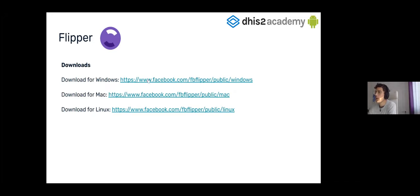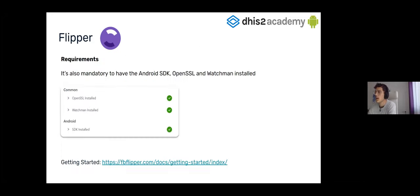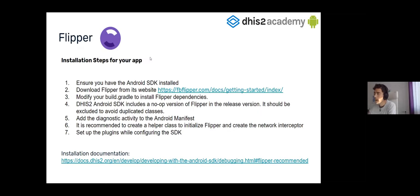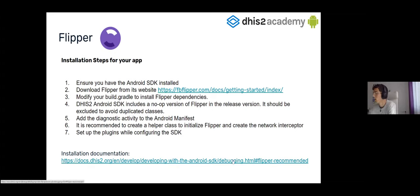For Flipper, you have the download links here in case you didn't download it yet. Just a reminder — you have these requirements: you have to install OpenSSL, Watchman, and the Android SDK. The Android SDK will be installed if you have installed the Android Studio Toolkit. Here you have a link to getting started with Flipper, and here are some installation steps to install Flipper in your app. We don't have to do these steps now because the Android skeleton app already has Flipper installed, but you can check these installation steps in case you want to install Flipper in your own application.